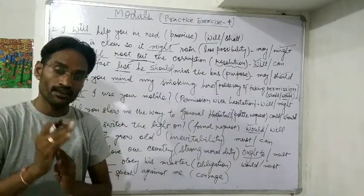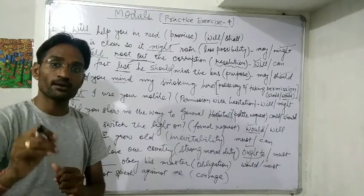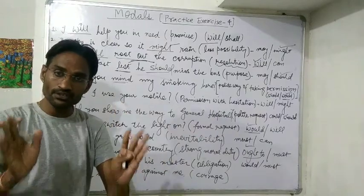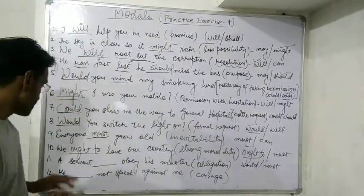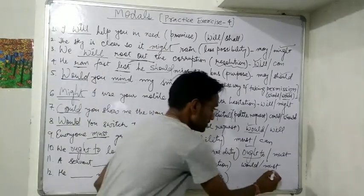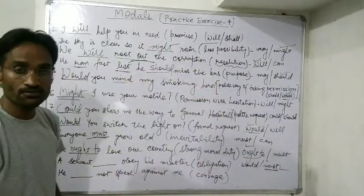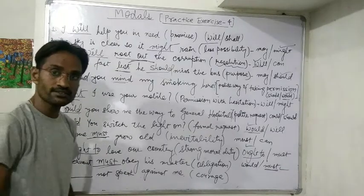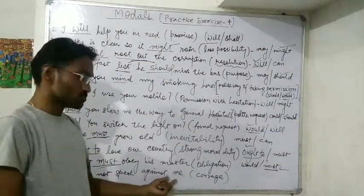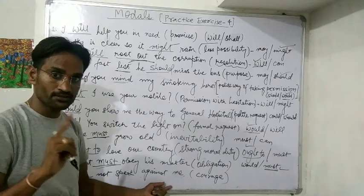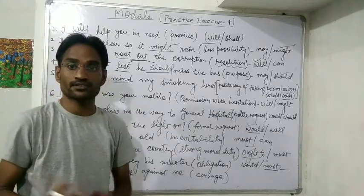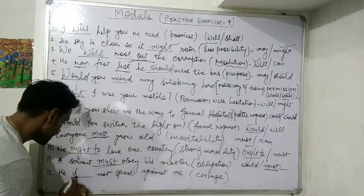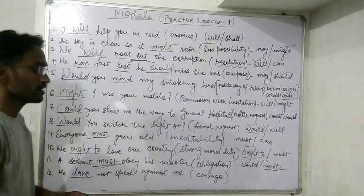Next: 'A servant obey his master' — obligation. A servant is obliged to obey his master, so we use 'must.' Answer: 'A servant must obey his master.' Finally: 'He not speak against me' — he lacks the courage to speak against me. Answer: 'He dare not speak against me.'